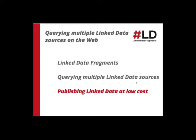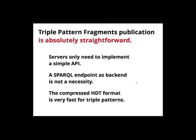What we see here is the effect of servers enabling clients to be intelligent instead of trying to be intelligent themselves. The semantic web vision we believe in is one of intelligent clients, not intelligent servers, because intelligent servers do not scale as these numbers show. We've seen the linked data fragments framework and the Triple Pattern Fragments interface. We've seen how to query multiple linked data sources live on the web. Now let's talk about publishing linked data at low cost — how can you do this yourself?